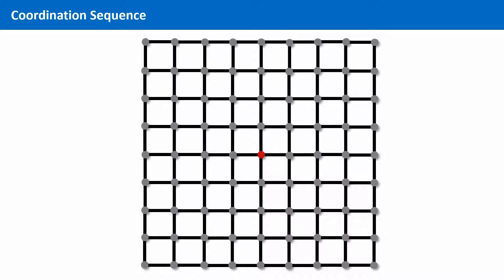First, you pick a node. Then you count the number of nodes that are one edge away from the origin. In this case, all nodes that are marked in blue are one edge away. Four in total. So we write down four.